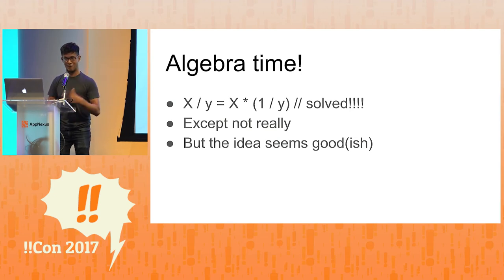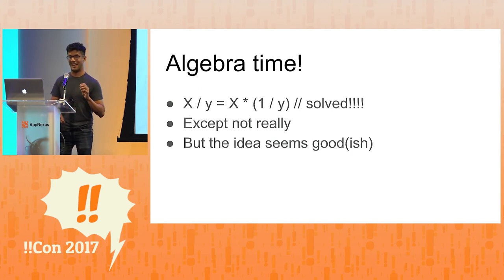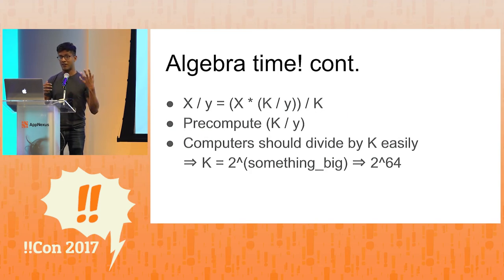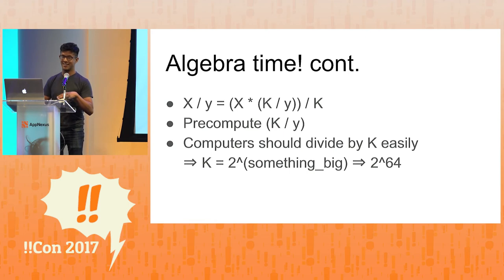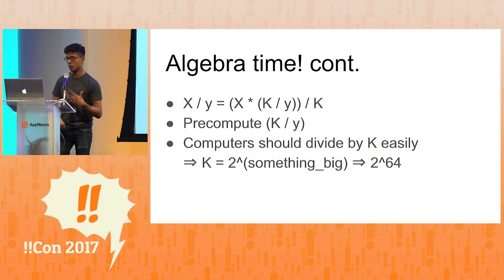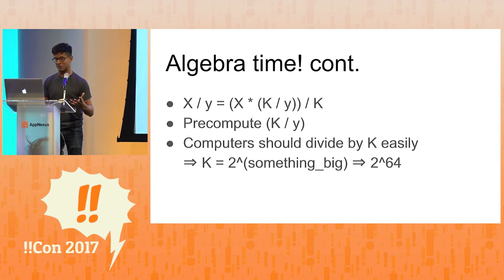This brought me back to fifth grade: X divided by Y is the same thing as X times one over Y. Except not really, because one divided by Y for computers is often going to be zero. But this approach is on the right track. X divided by Y is the same as X times K divided by Y, divided by K — the K's cancel. If you pre-compute K divided by Y, then it's a multiply and then another divide. But if K is a power of two, then this is a multiply and then a bit shift. What's a million divided by a thousand? It's a thousand — you just get rid of the bottom digits. Computers do the same thing with powers of two.